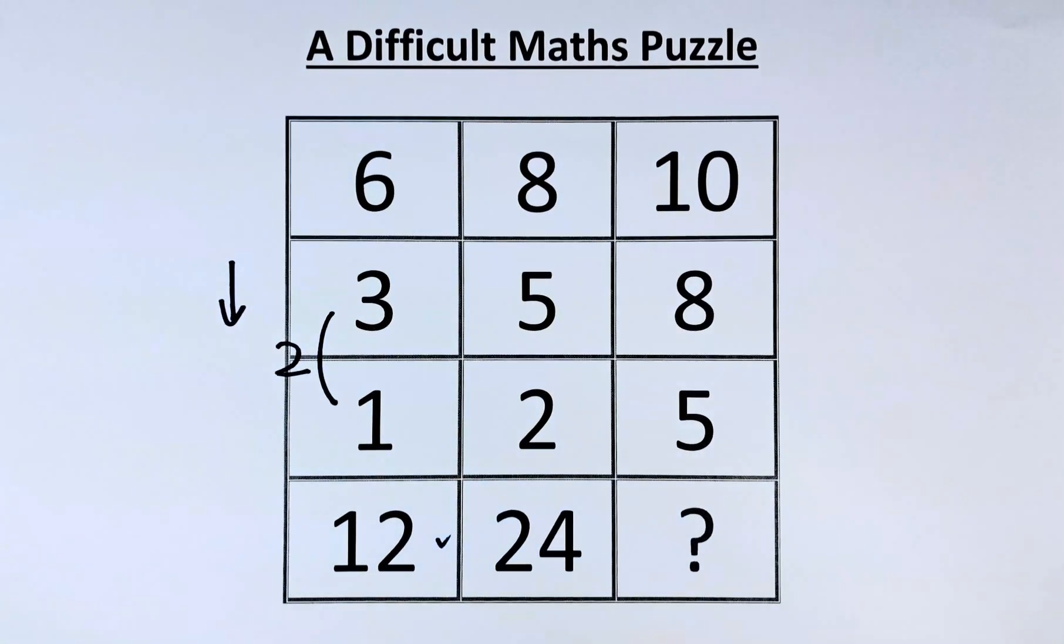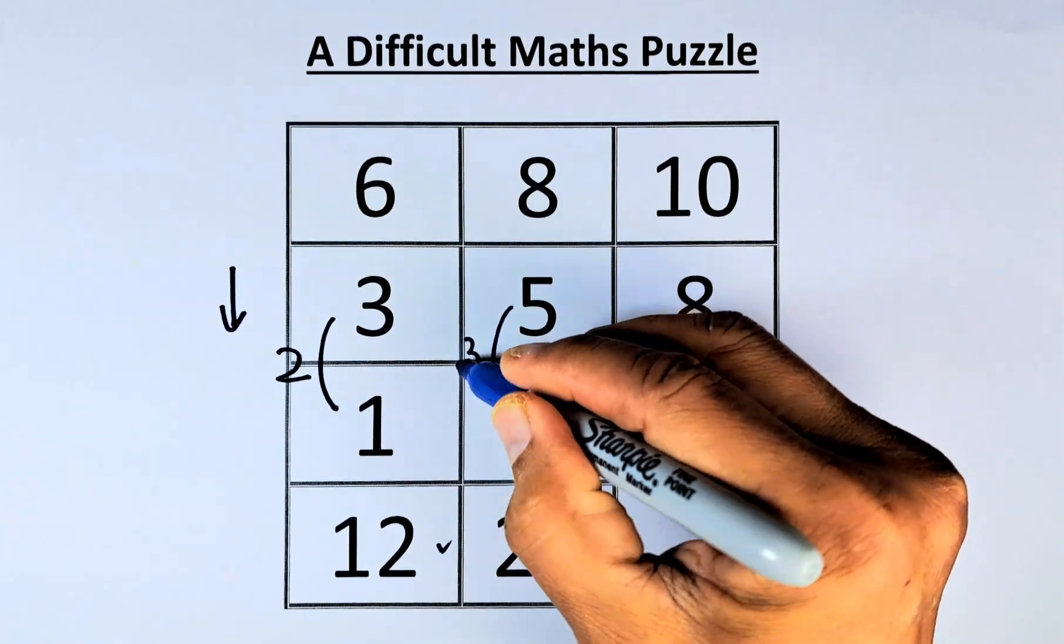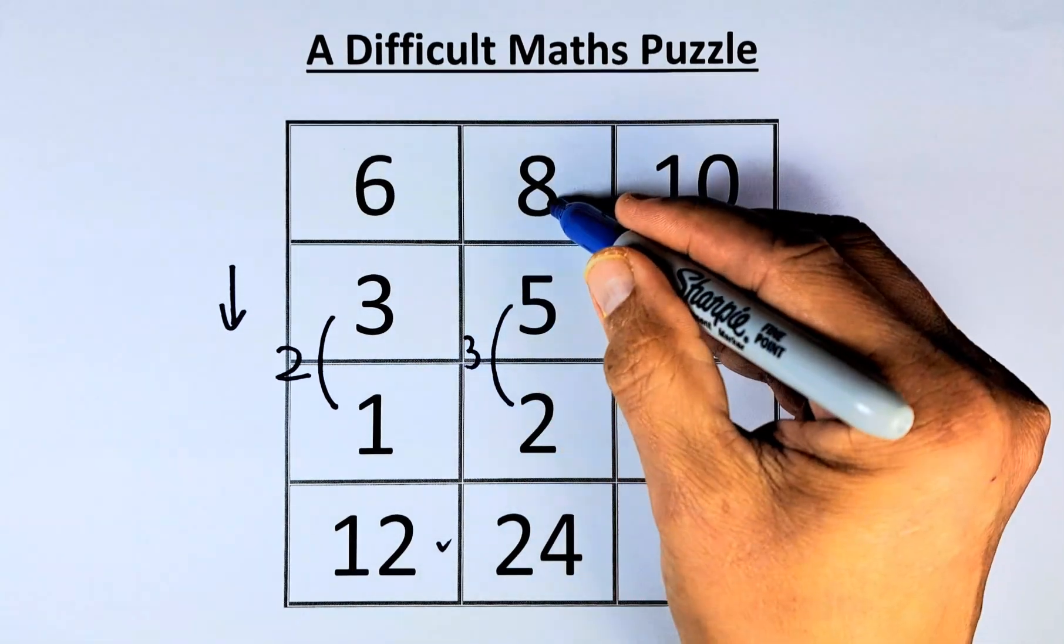The second one is the same thing. 5 minus 2 is going to be 3. 3 multiplied by 8 will give you 24.